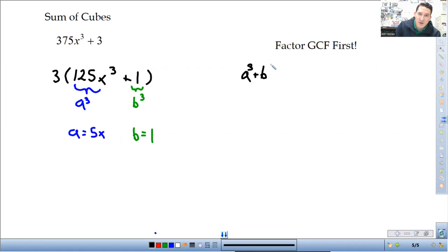And then I need to use the pattern. So, I'm going to write the pattern over here on the side. The A cubed plus B cubed factors into A plus B times A squared minus A times B plus B squared. So, I'm going to fill in the blanks there.